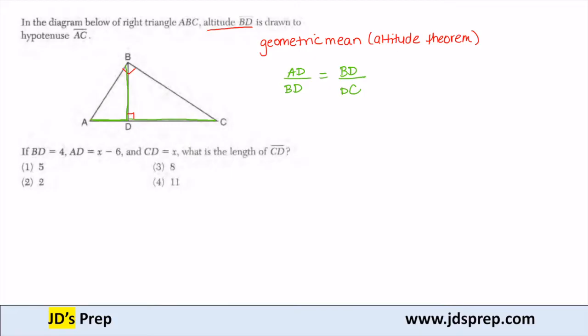So the altitude splits the hypotenuse into two segments: AD, which we know is x minus 6 because that's given, and another segment CD, which is given to us as x. You can form a proportion using this theorem. The other thing we know is that our altitude has a measure of 4.